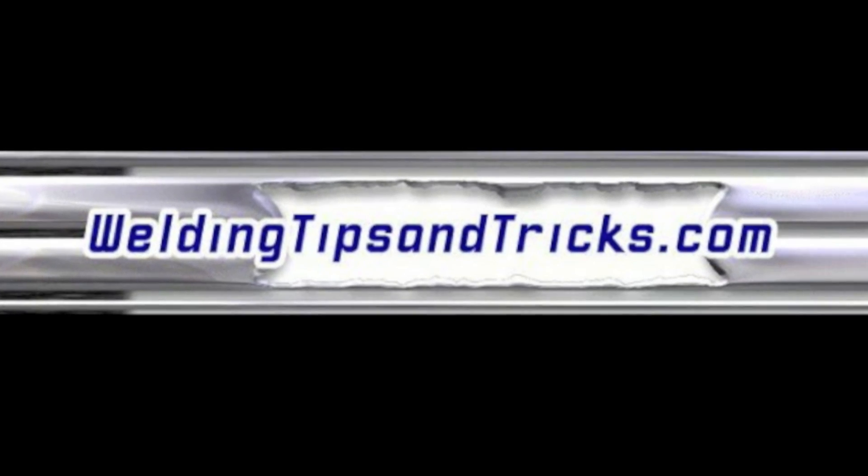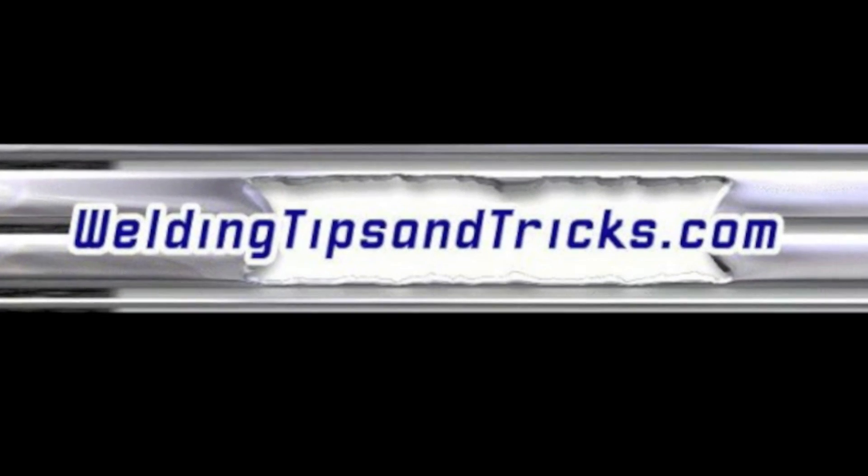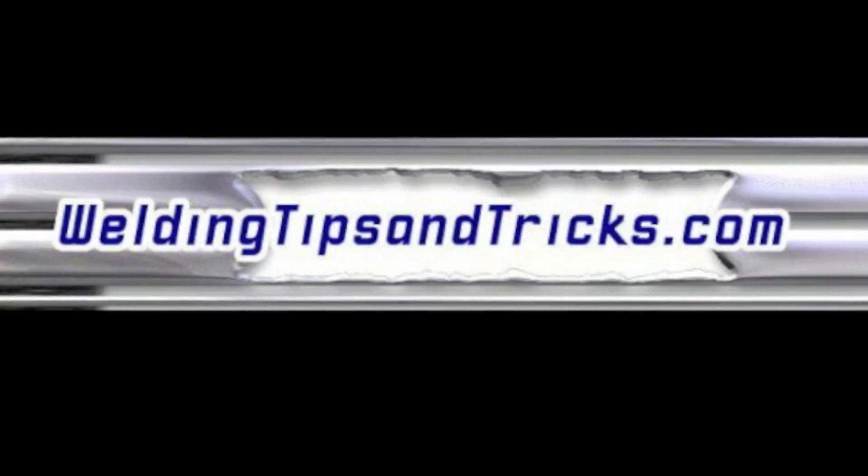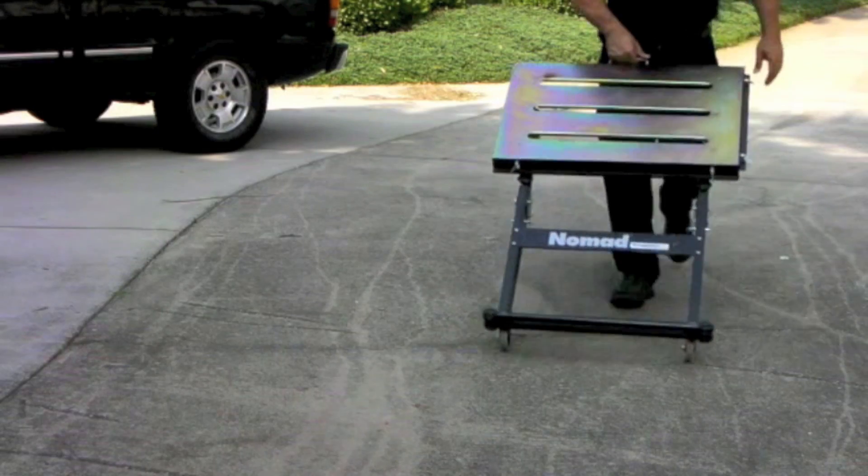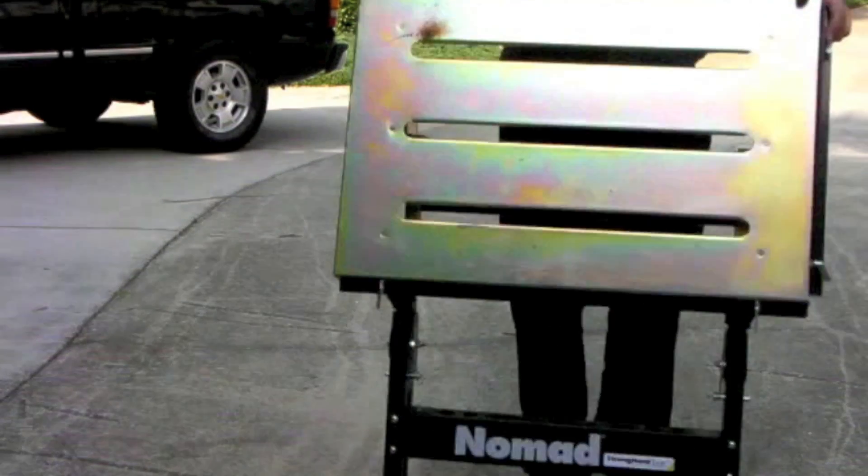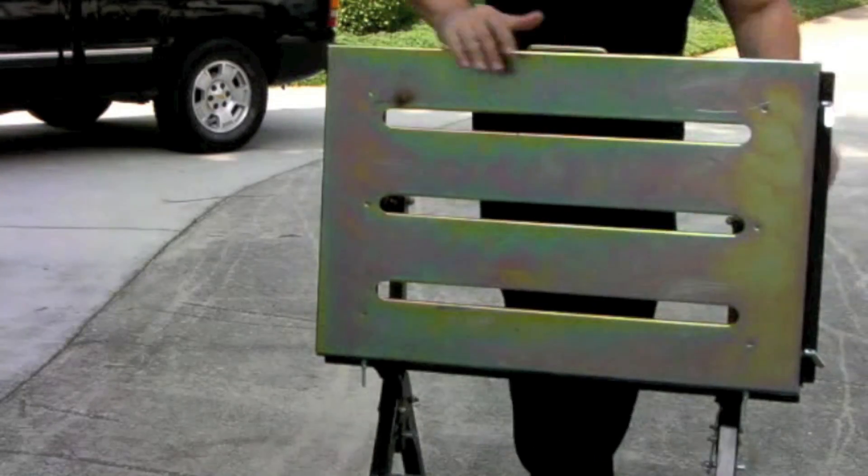Hey, here's another video from WeldingTipsAndTricks.com. Today we're going to be removing a pressed-in steel pin out of a big chunk of aluminum, and we're going to be doing it using a little portable welding table to hold up the part.